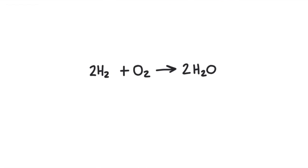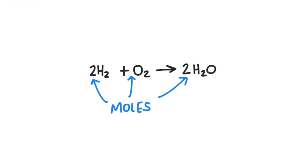Chemical equations like this work like recipes. This recipe says mix 2H2 and 1O2 and you get 2H2O. But two of what H2? Chemical equations are written in terms of moles. So it says mix two moles of H2 molecules and one mole of O2 molecules and you get two moles of H2O molecules.